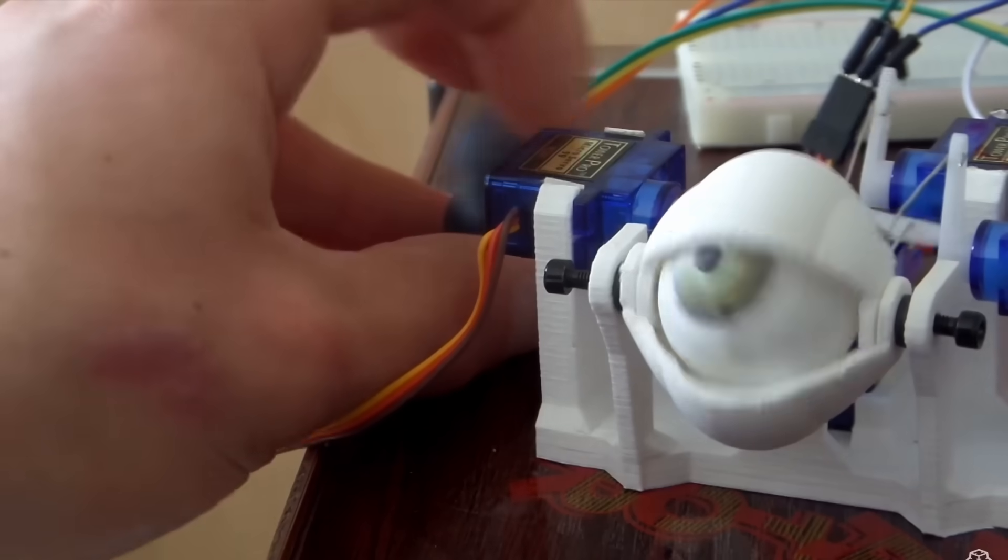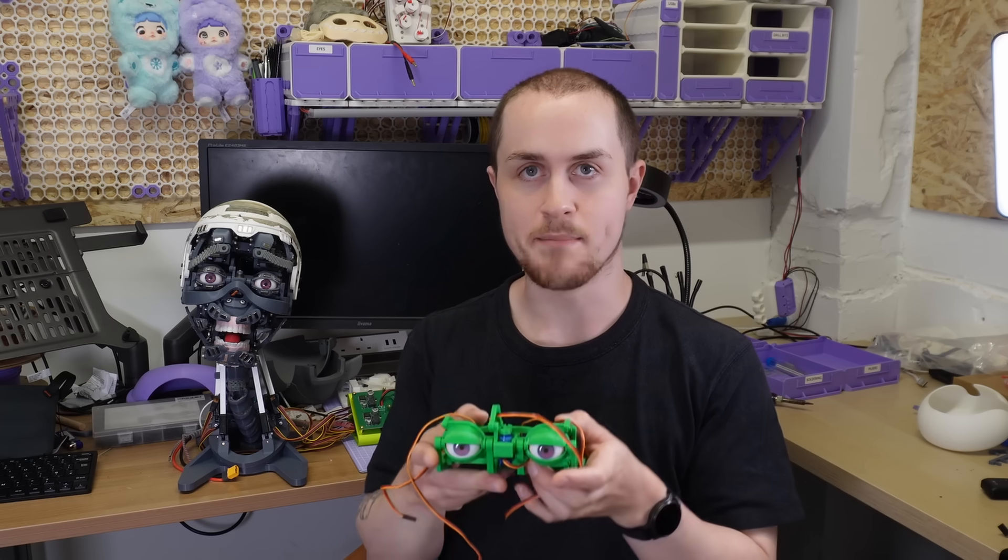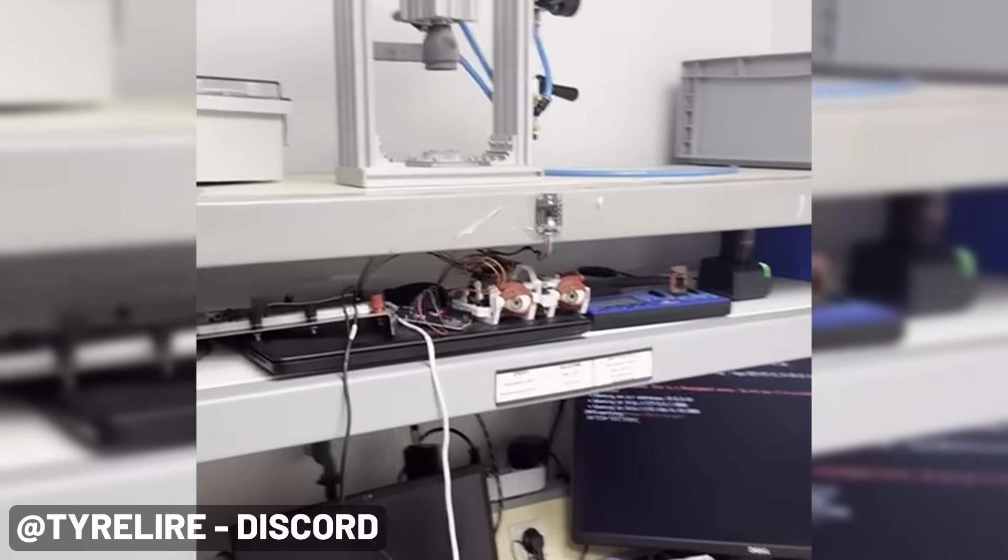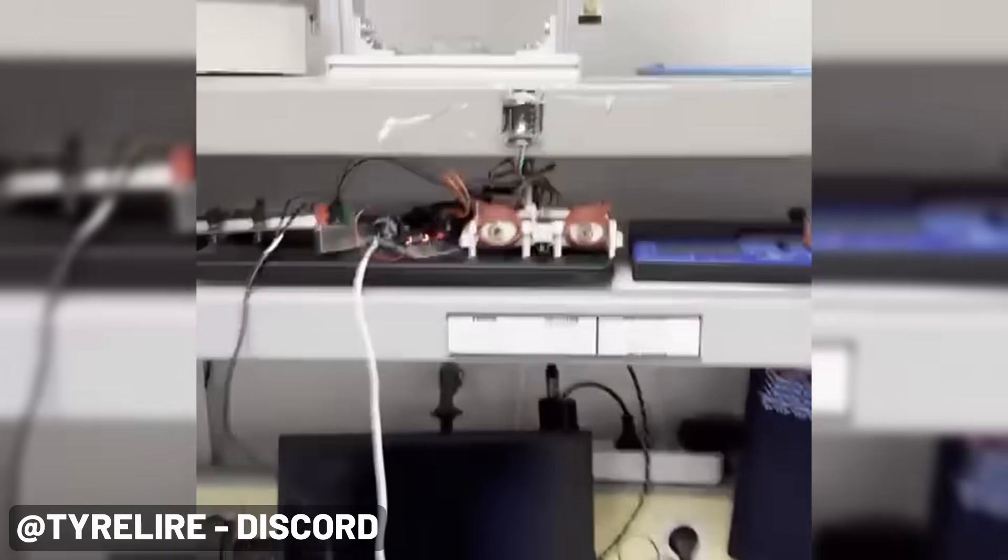Since my very first animatronic eye mechanism, people have suggested that I should use a camera to identify and track people, moving in real time and maintaining eye contact with anyone who walks by. A lot of my viewers actually did this themselves, but I was hesitant.